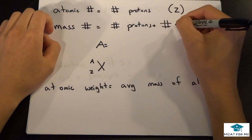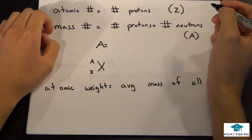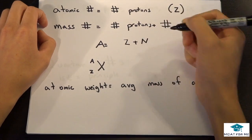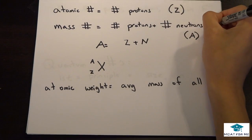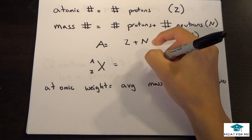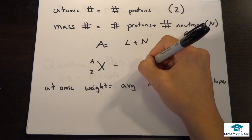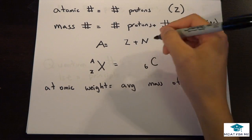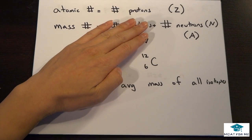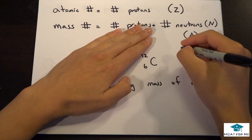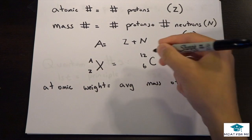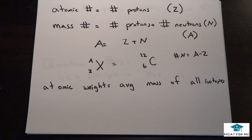Mass number is the number of protons plus the number of neutrons. We can say A equals Z plus N, where N is the number of neutrons and A is the total mass number. For example, carbon has an atomic number of 6 and mass number of 12. Using simple subtraction, we find there's six neutrons and six protons.